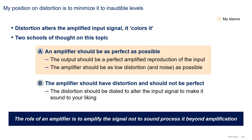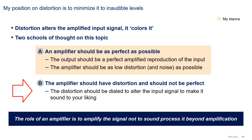Now, what is my stance on distortion? Distortion alters the amplified input signal, and this leads to two schools of thought. The first camp says that an amplifier should be as perfect as possible — the output should be a perfect amplified reproduction of the input, with as low distortion and noise as possible. The second camp says the amplifier should have distortion and should not be perfect; the distortion should be dialed to alter the input signal to make it sound to your liking. For example, one view is that your amp should make the input sound like live music.